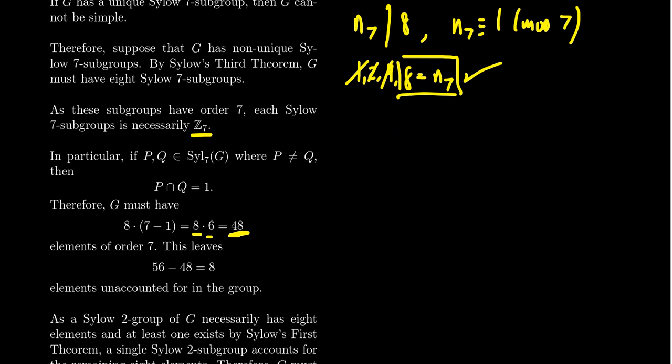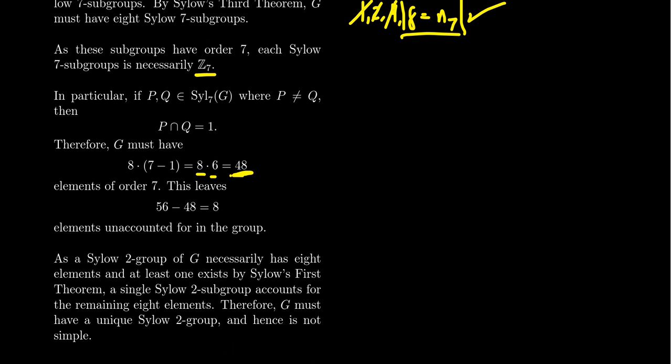So notice here that if we take these 48 elements of order 7 and we subtract them from the total group, there is 56 total. 56 take away 48 is now 8. So there are 8 elements left in the group that are not order 7.